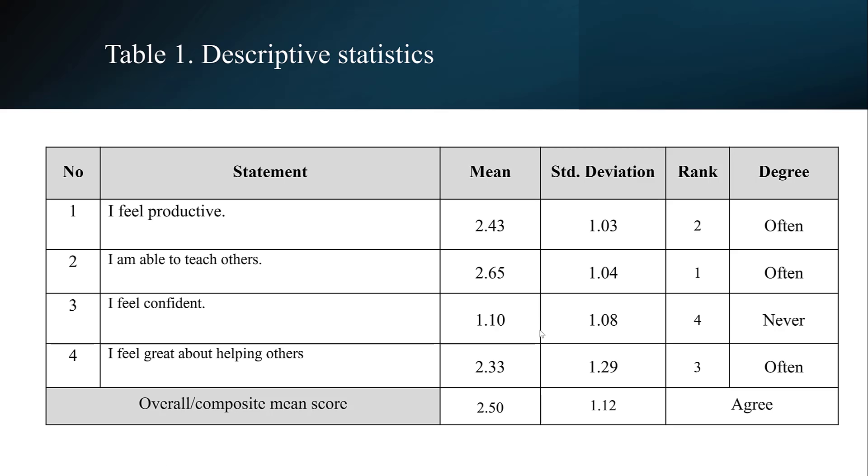This is an example of how you can report that in APA style. You put the number of items, the items per se or the statements, their mean score, their standard deviation, and you can rank them based on the overall mean score. Then you can put the verbal interpretation corresponding to the content of the Likert scale. You can also get the overall composite or mean score. This is in brief how you can do that in APA style.